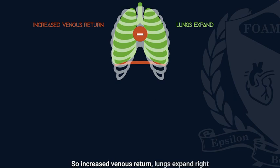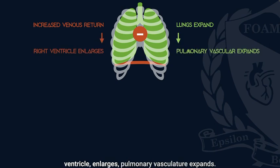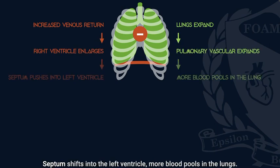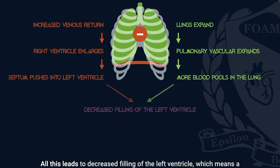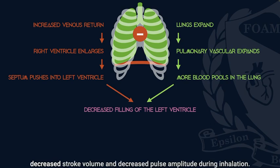Here's that process broken down with the relationship between air and blood side by side. Increased venous return causes the lungs to expand, the right ventricle enlarges, the pulmonary vasculature expands, the septum shifts into the left ventricle, and more blood pools in the lungs. All this leads to decreased filling of the left ventricle, which means a decreased stroke volume and decreased pulse amplitude during inhalation.